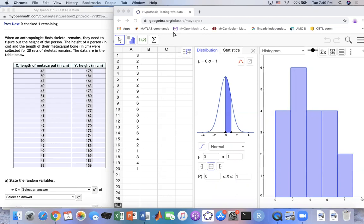Here's the problem. An anthropologist finds skeleton remains and needs to determine the height of a person. The height of the person depends on the metacarpal bone. In here, they have 20 data sets.